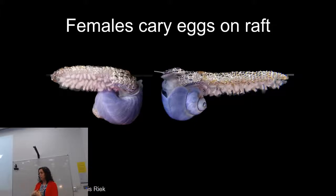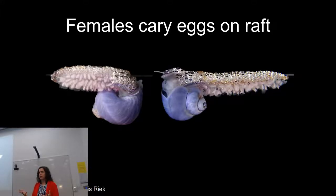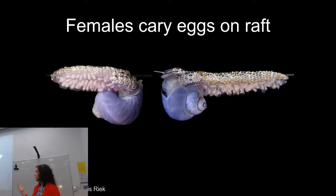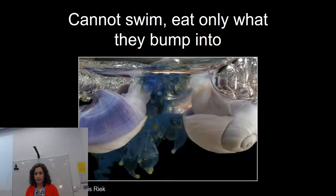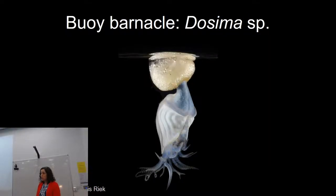The female violet snails carry eggs on the raft, and unusually for marine organisms, the snails actually need to bump into each other to mate rather than releasing eggs and sperm into the water. They're also cannibalistic. They can't swim — they've been knocked off bubble rafts before and just sink into the abyss. They only eat what they bump into, making them particularly vulnerable to collecting efforts.